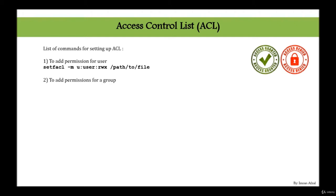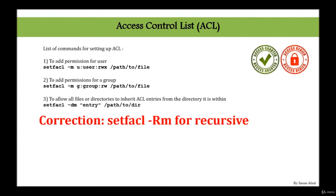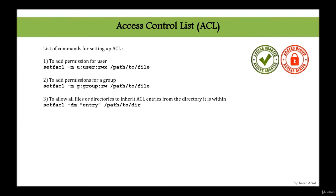To add permission for a group, use setfacl with -g and the group name along with the desired permissions. If you give read permission to the group's middle three bits, every group on your Linux system can read it — but if you only want one specific group to read it, ACL comes to the rescue. To allow all files or directories to inherit ACL entries from a parent directory (cascading), use setfacl with the -d -m option and the entry you want, specifying the directory — since only directories can cascade, not files.